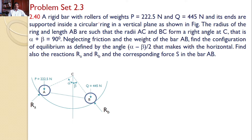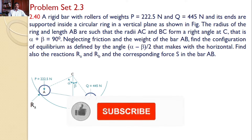A rigid bar with rollers of weights P equal to 222.5 newtons and Q equal to 445 newtons has its ends supported inside a circular ring in a vertical plane as shown in the figure. There are two rollers P and Q, attached with a string, and placed inside a circular ring. The radius of the ring and length AB are such that the radii AC and BC form a right angle at C, that is alpha plus beta is equal to 90.